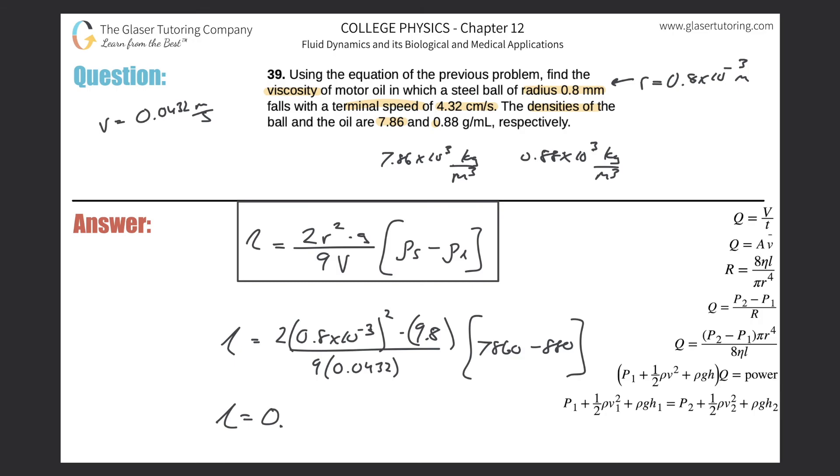And we get a decimal value here. It's going to be about 0.225 or so, 0.225. And that is pascal seconds. Those are the units of viscosity.